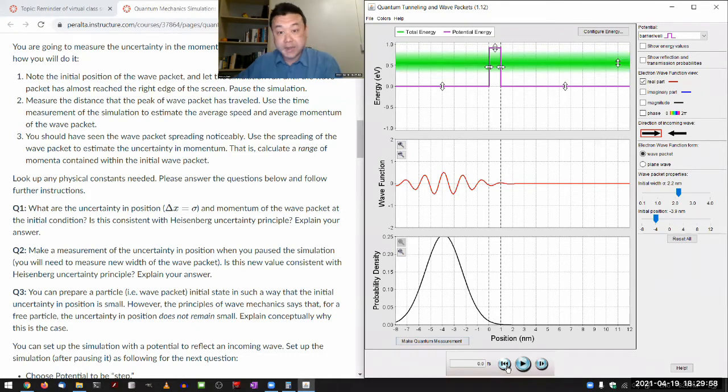One in a thousand or one in ten thousand chance is actually not that bad compared to the classical prediction, which would say you would never find this particle on this side. We call the region beyond this first rising part of the barrier the classically forbidden region because classical mechanics would predict that the particle is never found on this side.